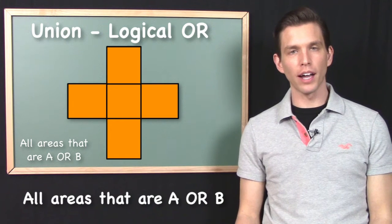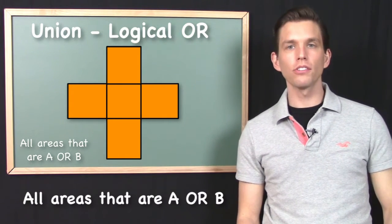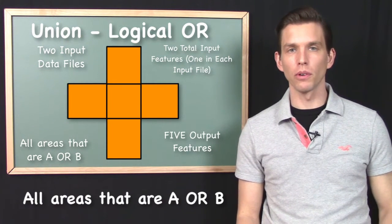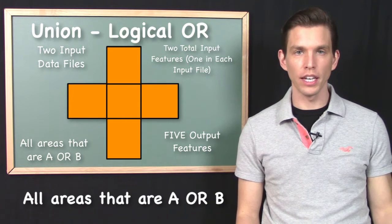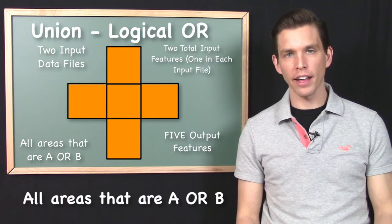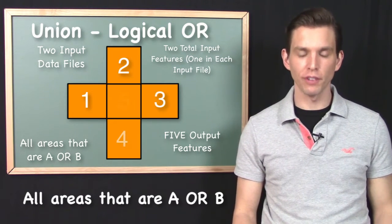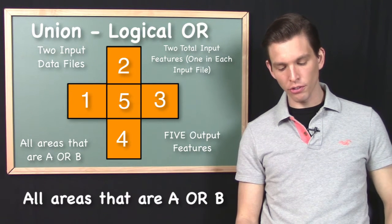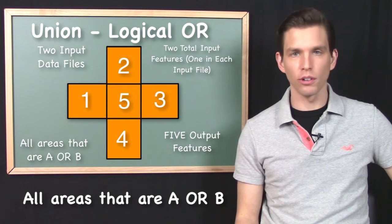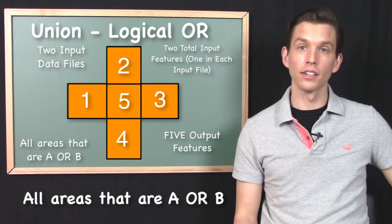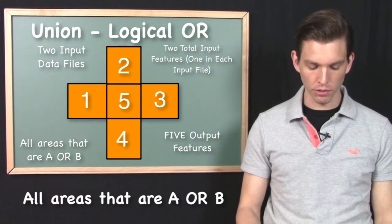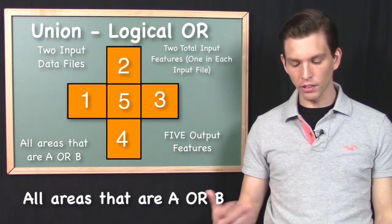It's very different. I end up with one output file again, but this time it has five features in it. I had two input features — one in each input file — but in the output file I've got five features: four features created from the areas where the rectangles did not overlap, and one created from the area where they did overlap.